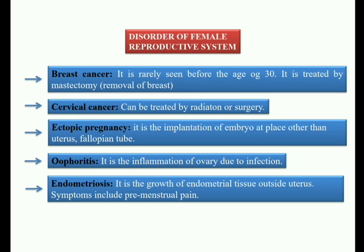The fourth disorder is oophoritis — inflammation of the ovary due to infection. The fifth disorder is endometriosis — the growth of endometrial tissue outside the uterus. Symptoms of endometriosis include premenstrual pain before the start of menstruation. These are the key disorders of the female reproductive system: breast cancer, cervical cancer, ectopic pregnancy, oophoritis, and endometriosis.